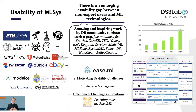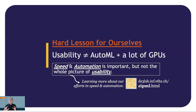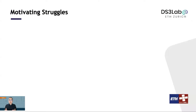When we first looked at usability in 2016, we thought that the speed and degree of automation of a machine learning system was all we needed. Both of them are actually very important. But it took us an embarrassingly long amount of time to realize that these two aspects are not really the full picture. In fact, even with a machine learning system that's very fast and fully automated, we see struggles from our users in using them.